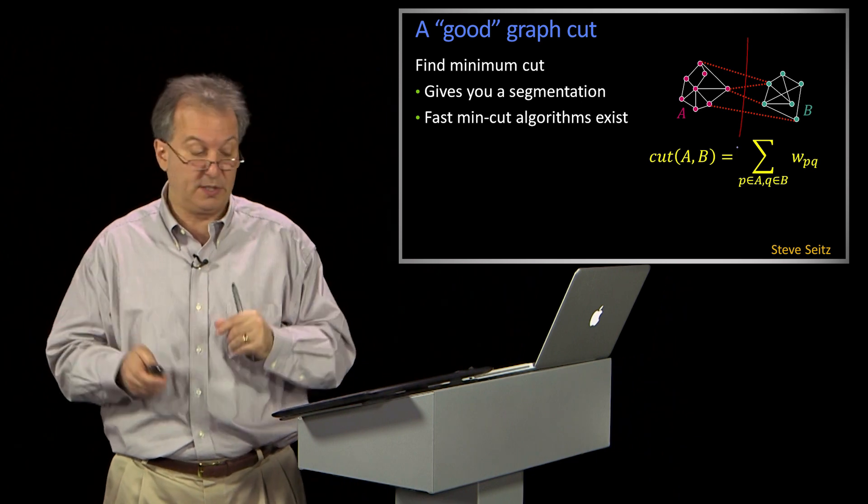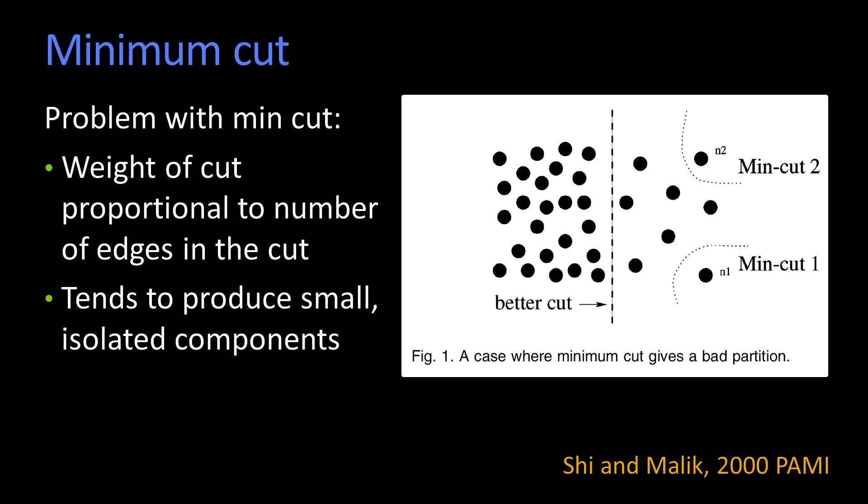The idea is that would partition your graph. A problem though, if we just use min-cut for doing segmentation, is that min-cut by definition is going to try to pull out little segments that have as few connections as possible. So what it tends to do is it tends to pull off very small little segments.